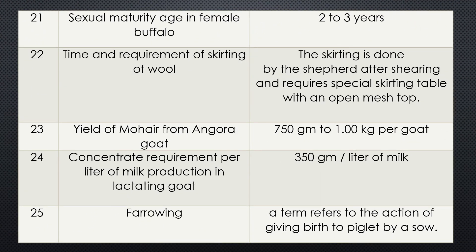Question twenty one: Sexual maturity age in female buffalo. Answer is two to three years. In cow we have seen it is two years. Buffalo is a little bit later — six months to one year more. So in buffalo the sexual maturity age is two to three years.